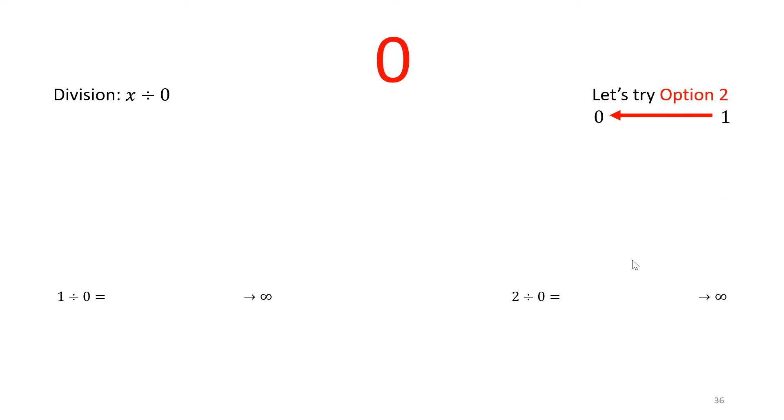So here's the thing. If 1 divided by 0 approaches infinity and 2 divided by 0 approaches infinity, does that mean 1 over 0 and 2 over 0 are the same? Does that mean 1 is equal to 2? Wait a minute. Something did not go right. So let's move ahead. Let's try option number 3.